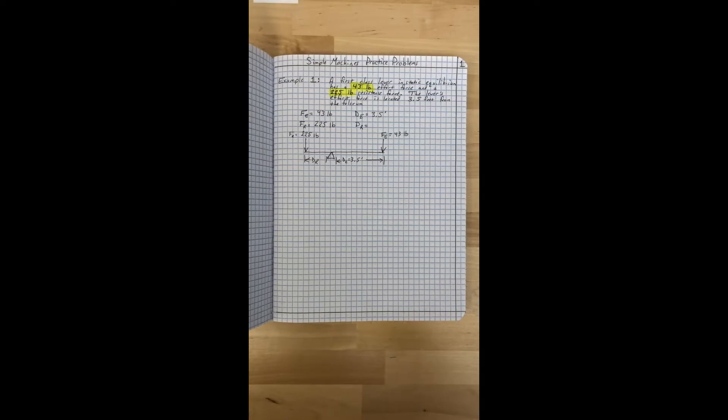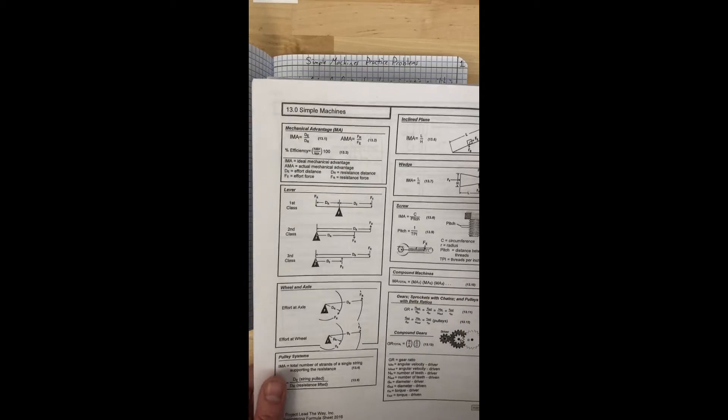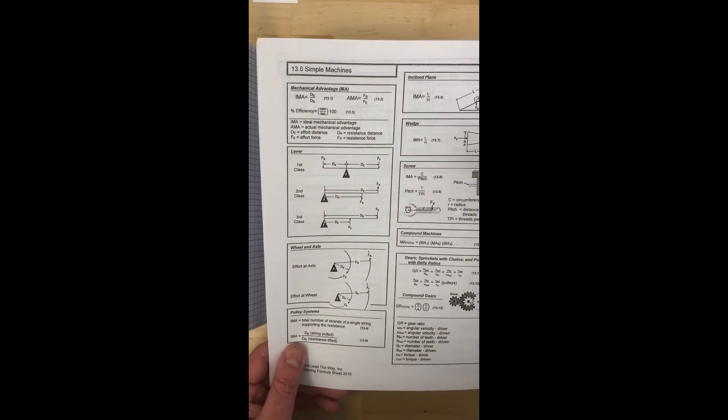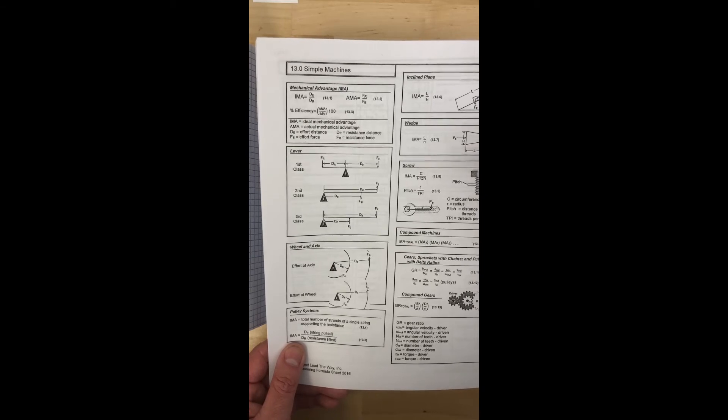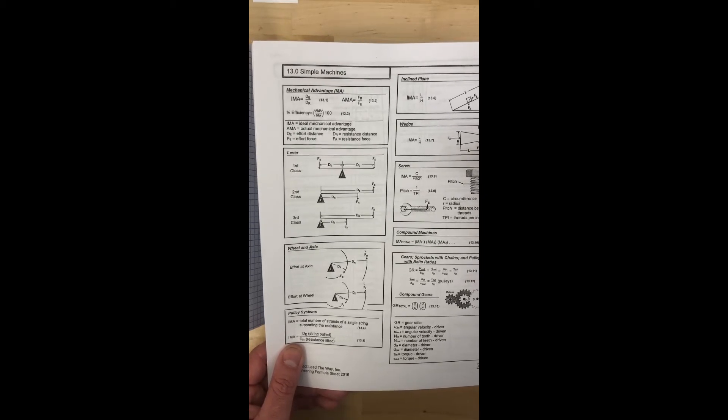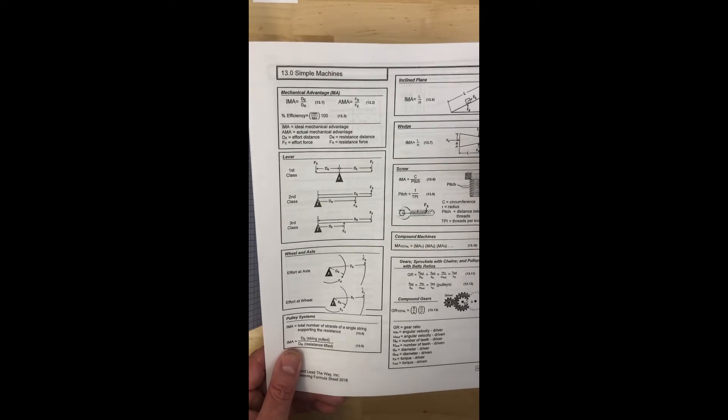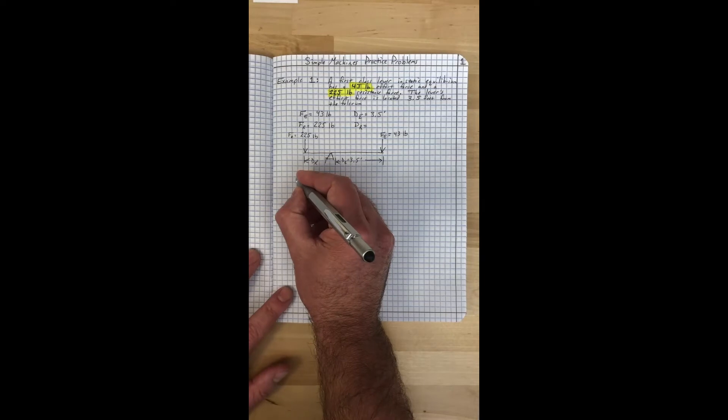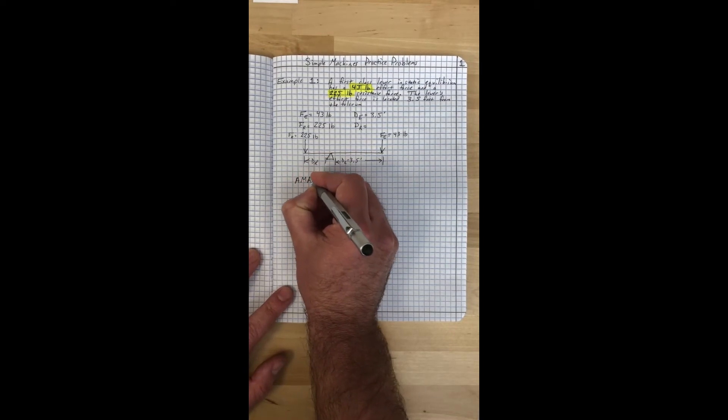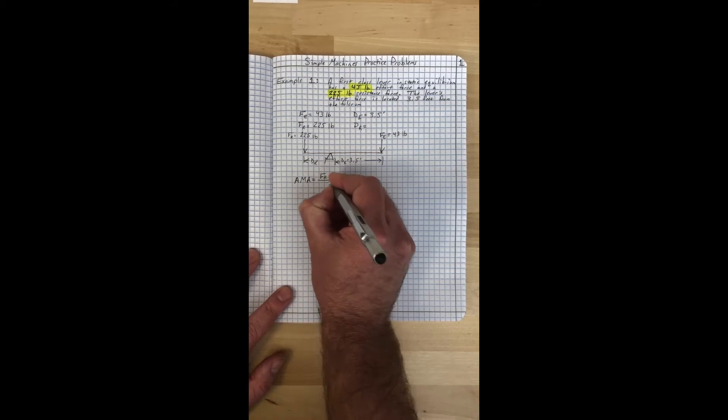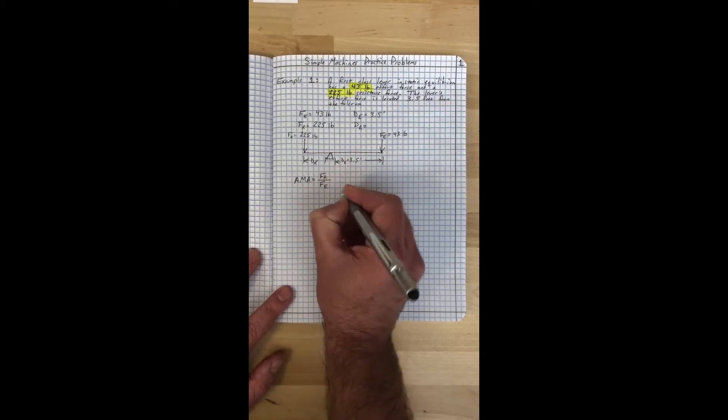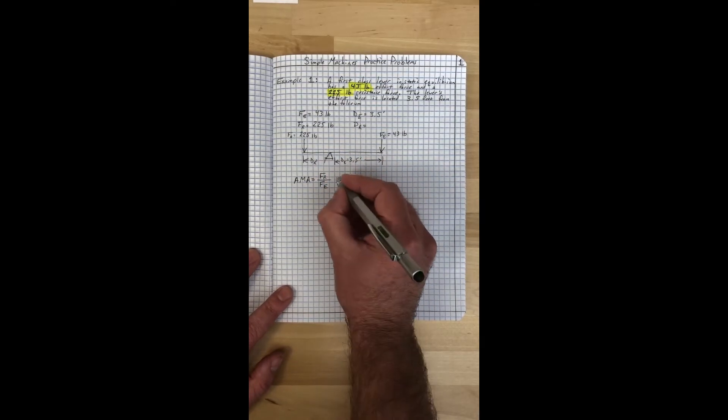Now we're ready to calculate the actual mechanical advantage of the system. Actual mechanical advantage, or AMA, is resistance force divided by effort force. If you ever forget any of these, don't forget to pull out your formula sheet which I have right here. There is also a link to a PDF file with these in your Schoology page. AMA equals resistance force divided by effort force, and the resistance force is 225 pounds.